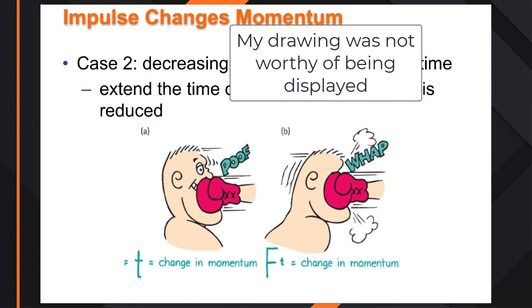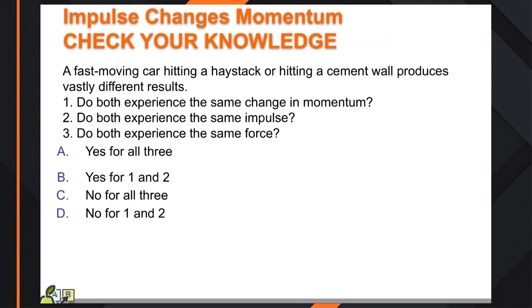At motorcycle races, why are there bales of hay around the corners instead of concrete walls? It's to extend the time through which we're trying to slow that object down.